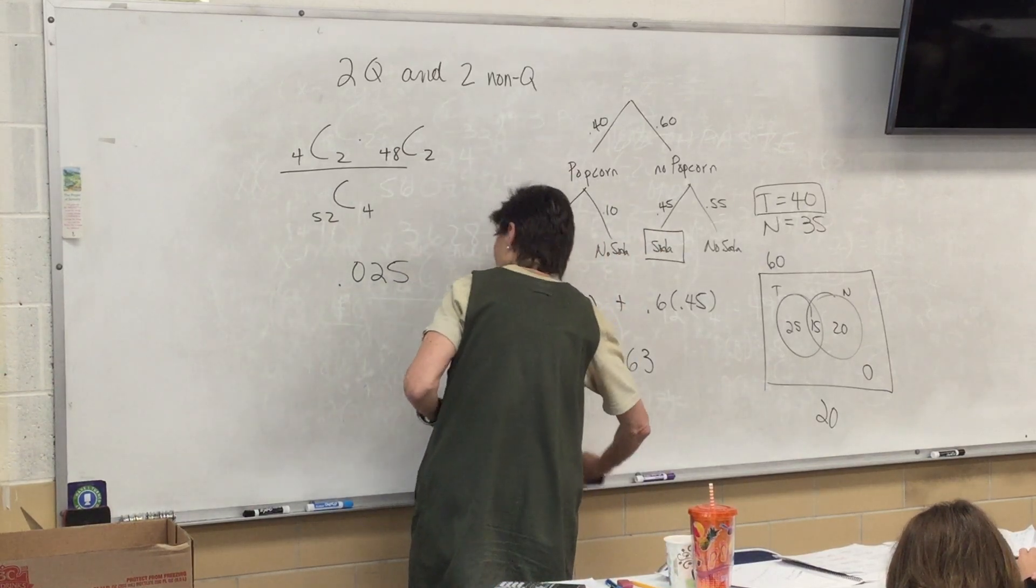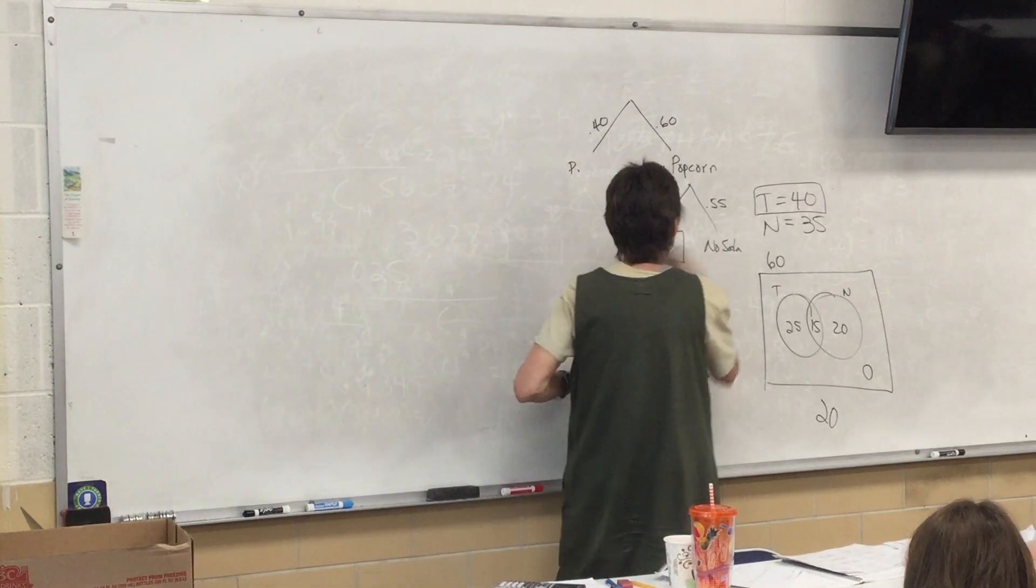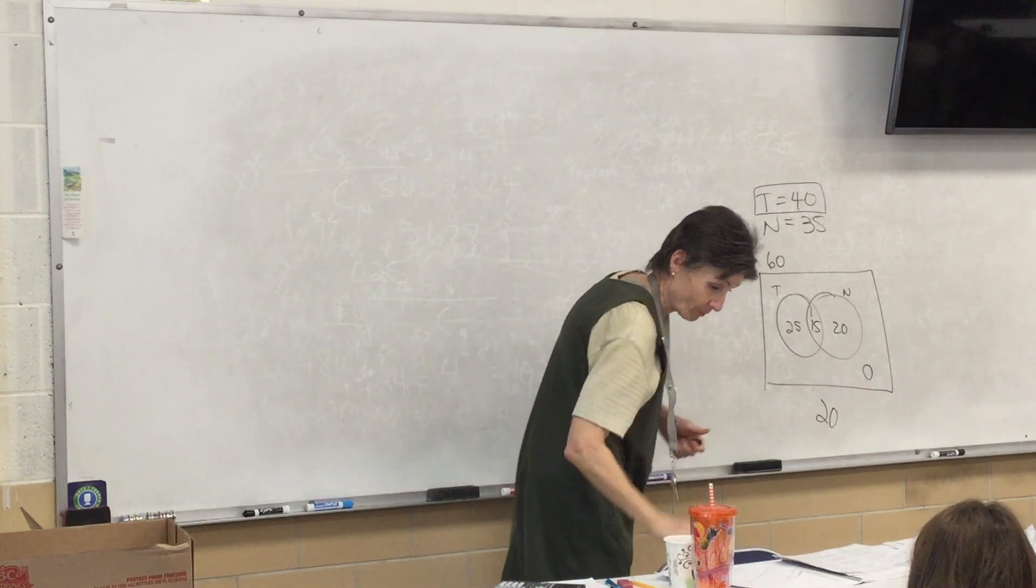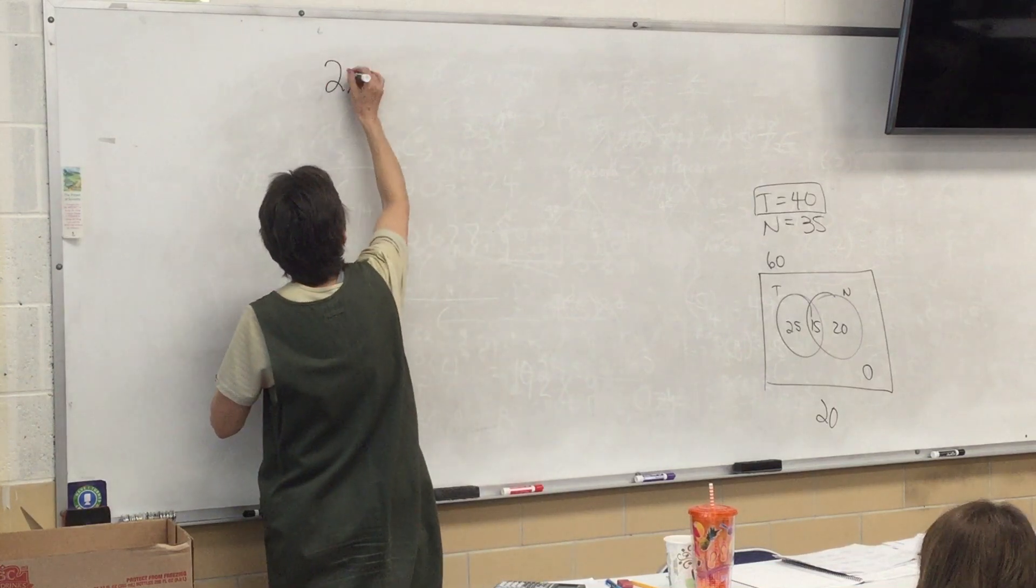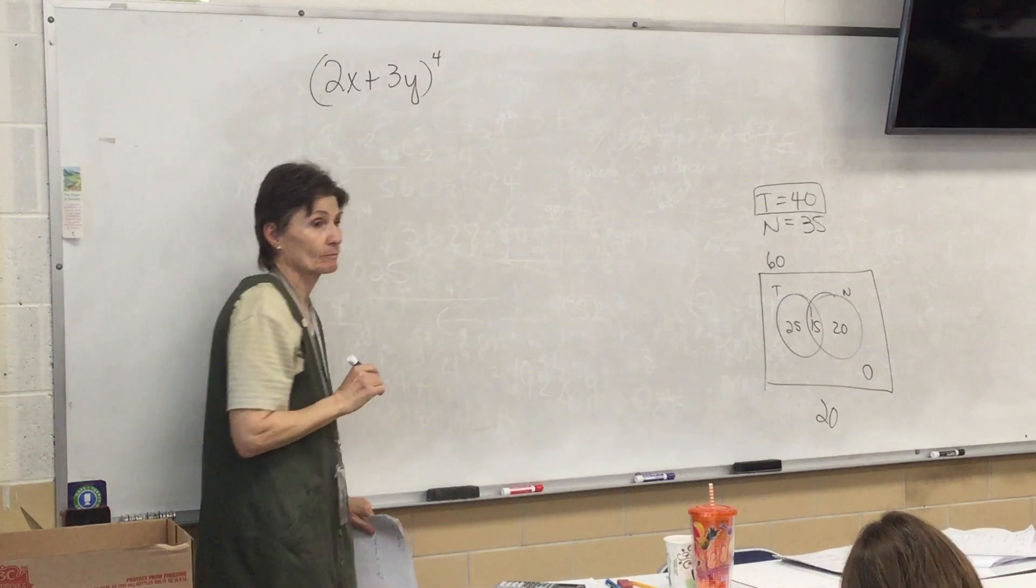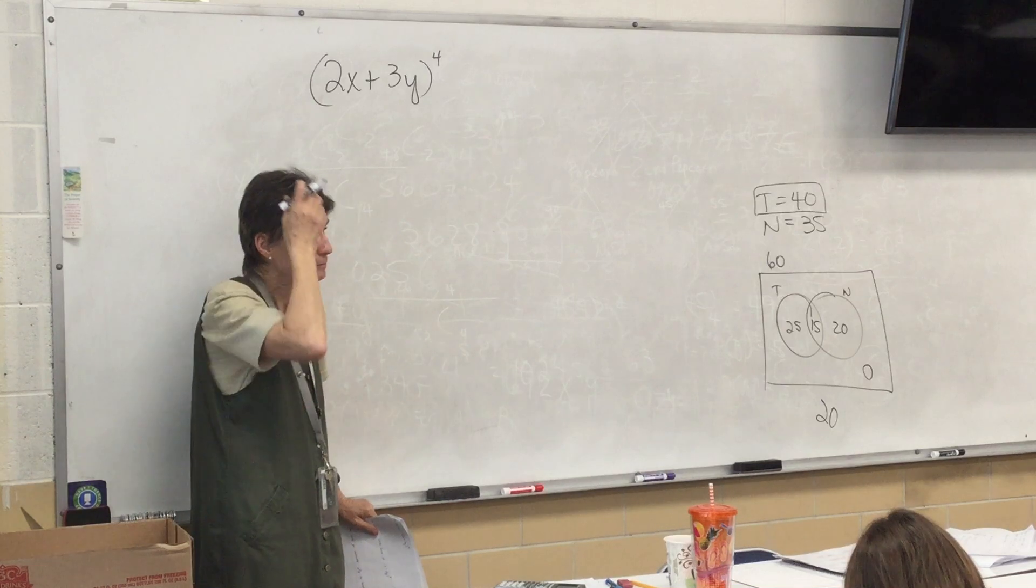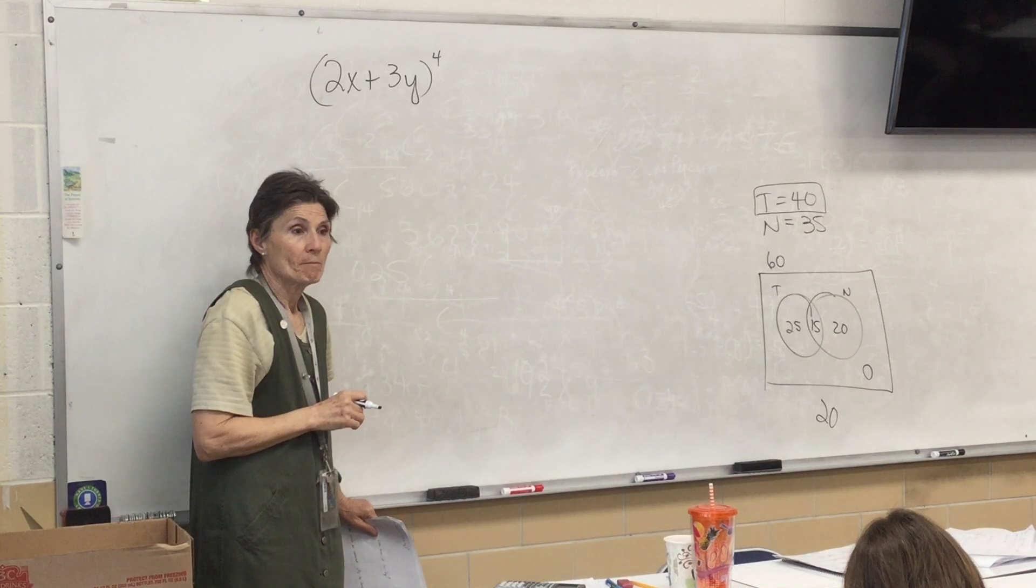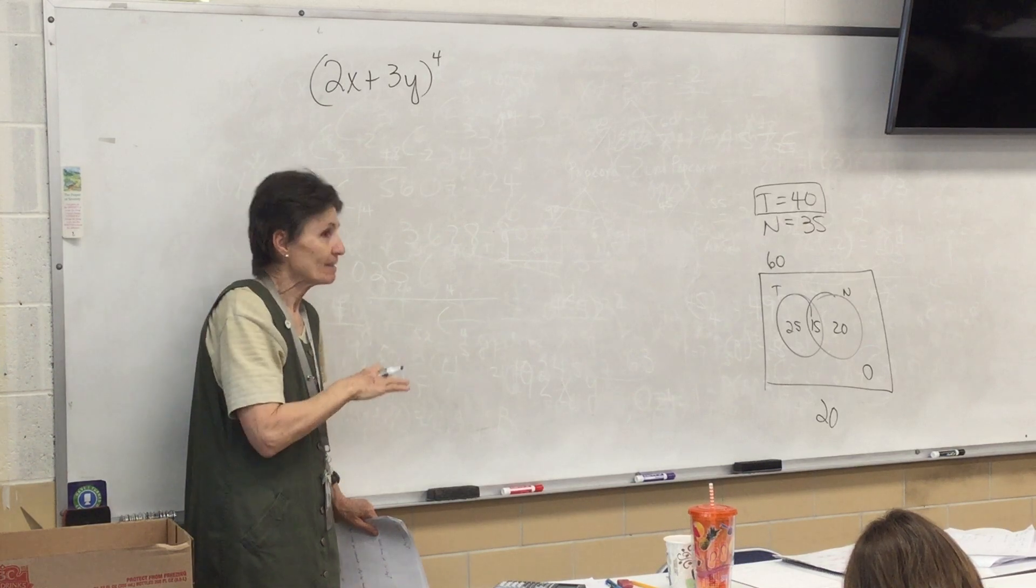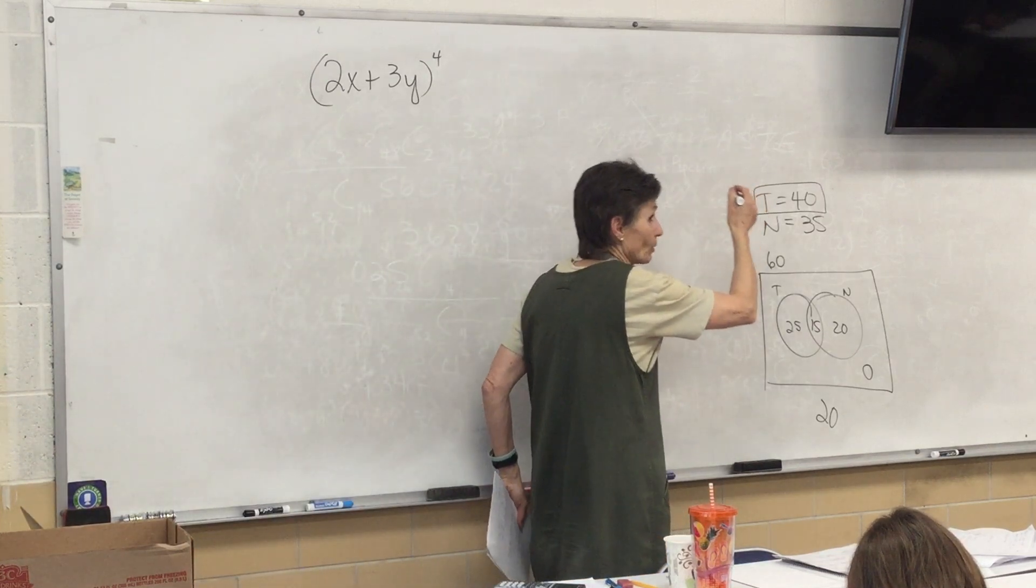All right, now we're back to where we started today. So this should be easy for you. We talked about it just a few minutes ago. So, we want to expand 2x plus 3y to the 4th. Who remembers how to start? We've got to find the 4th row, right? Now, we already did that today. We already built the triangle. We want everybody to remember how it works.